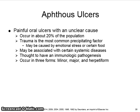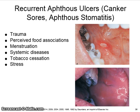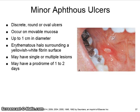Some patients associate the initiation of apthous ulcers with eating certain foods such as citrus fruits. Substantial evidence indicates that apthous ulcers have an immunologic pathogenesis. They occur in three forms: minor, major, and herpetiform. Apthous ulcers can be related to trauma, food associations, menstruation, systemic disease, tobacco cessation, and stress.